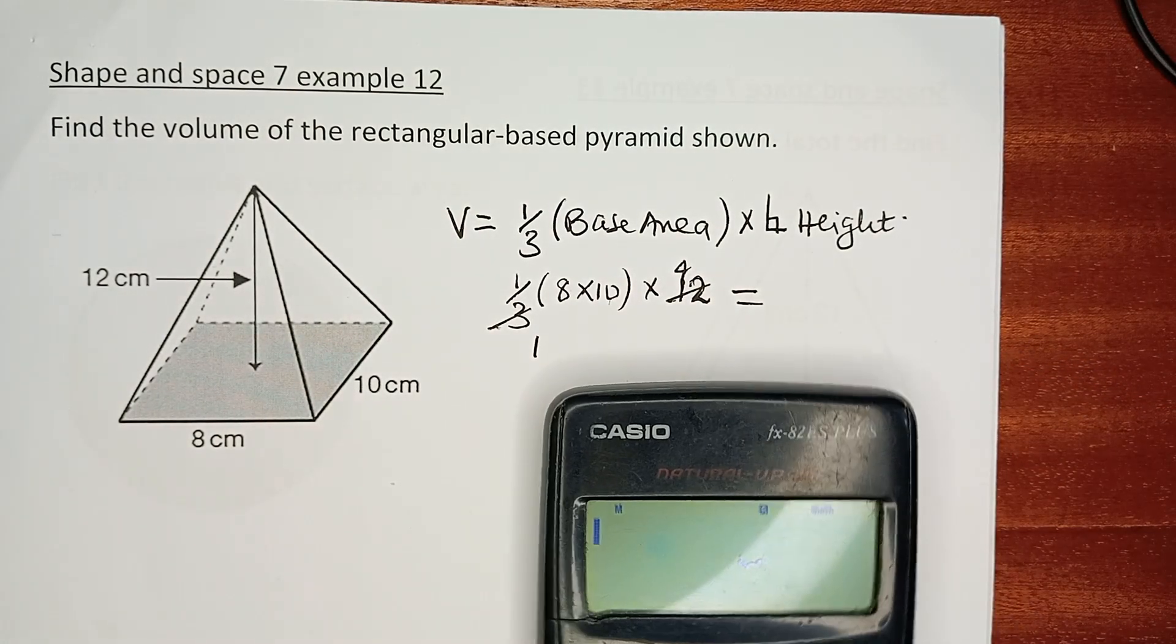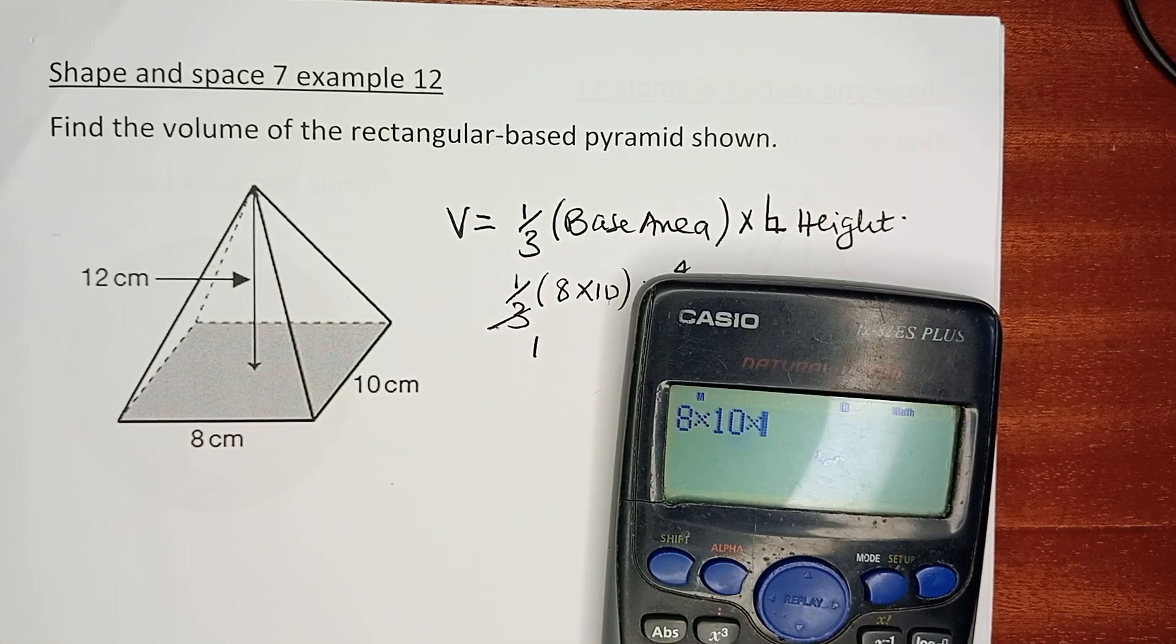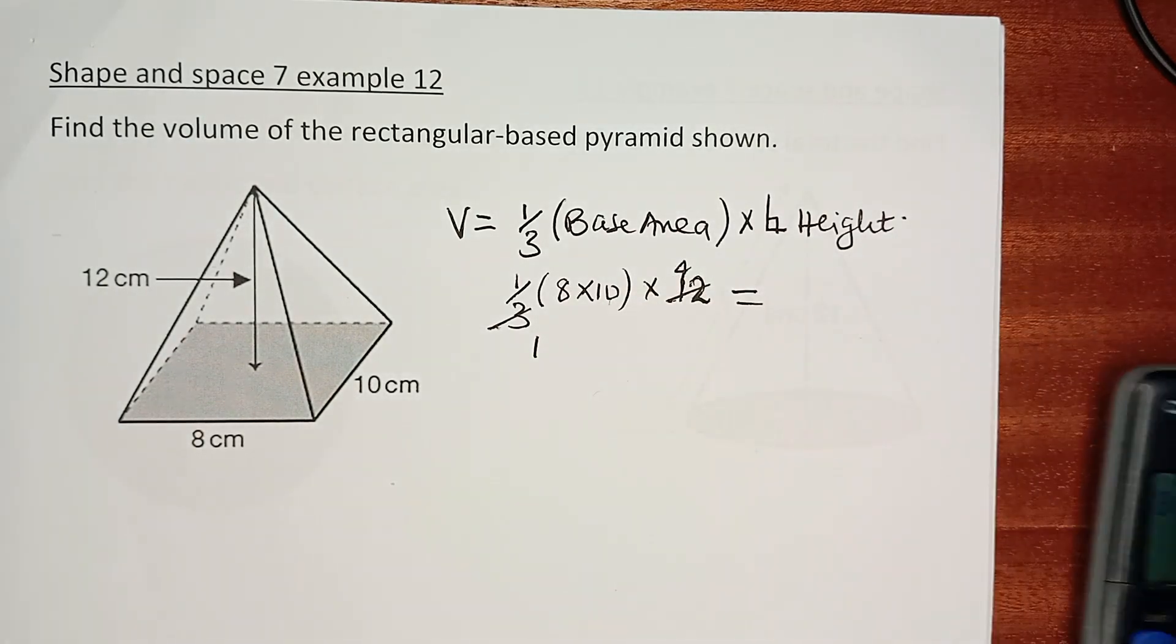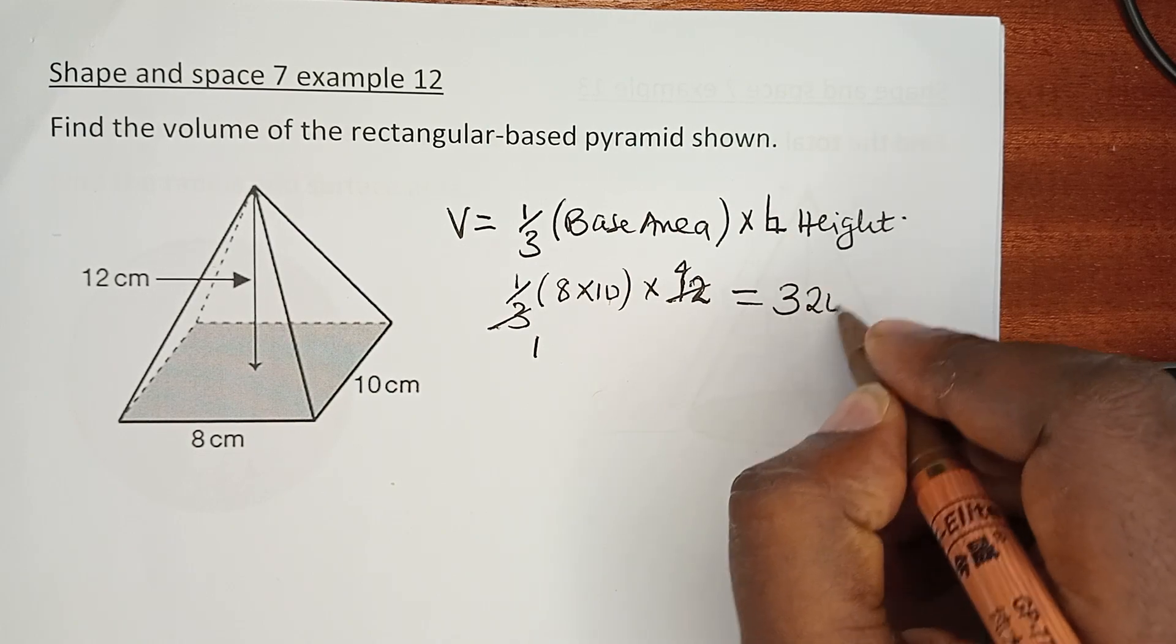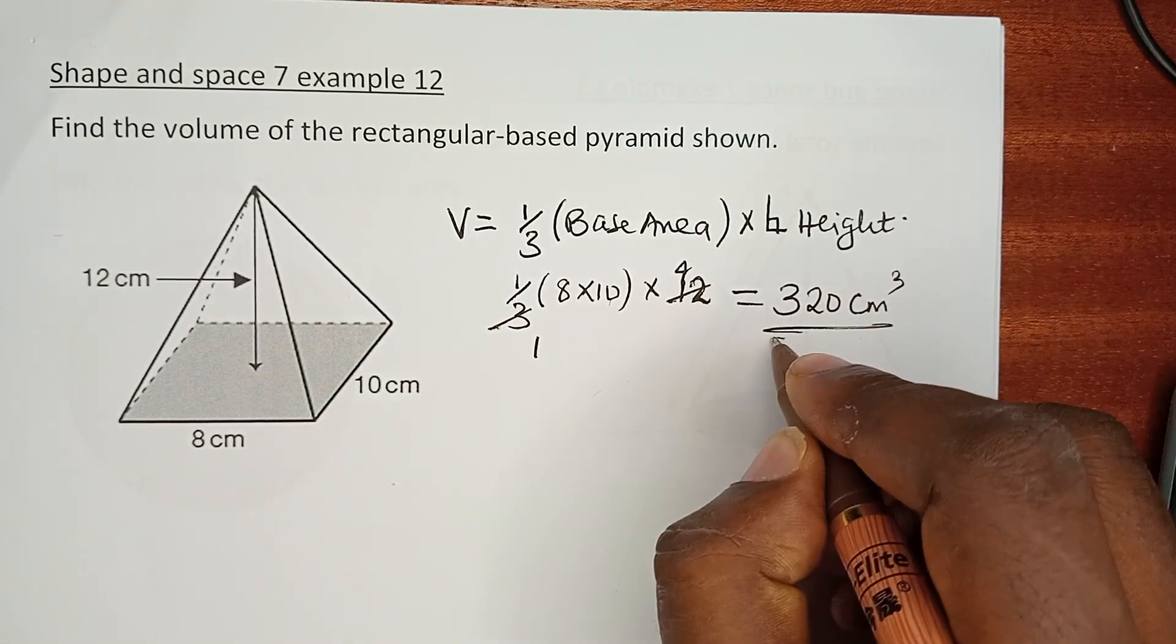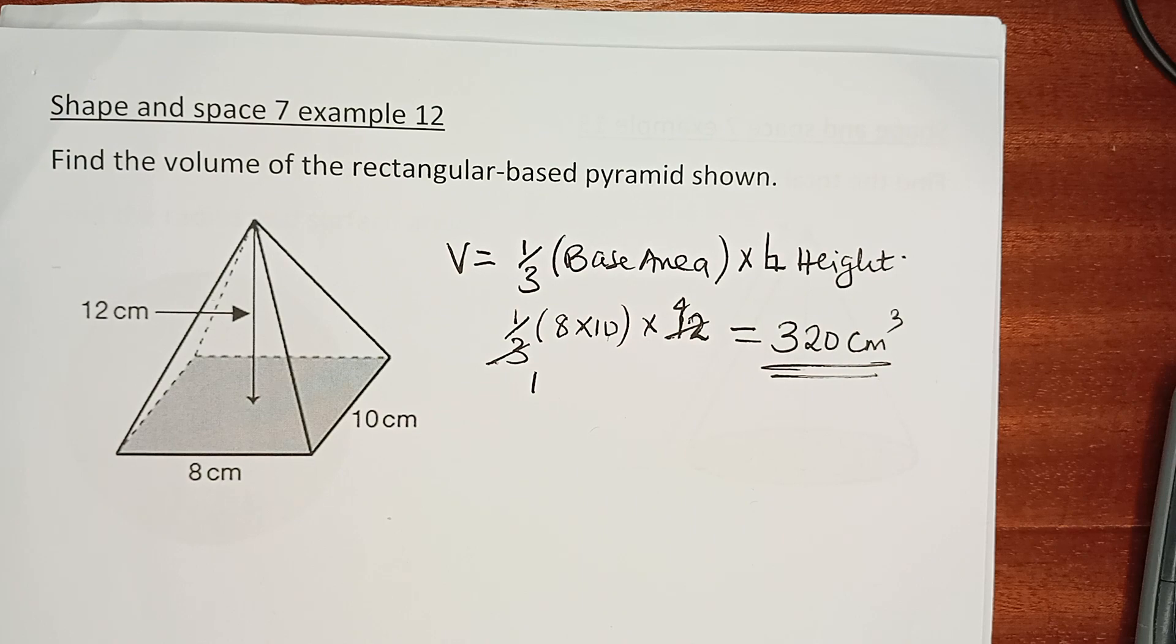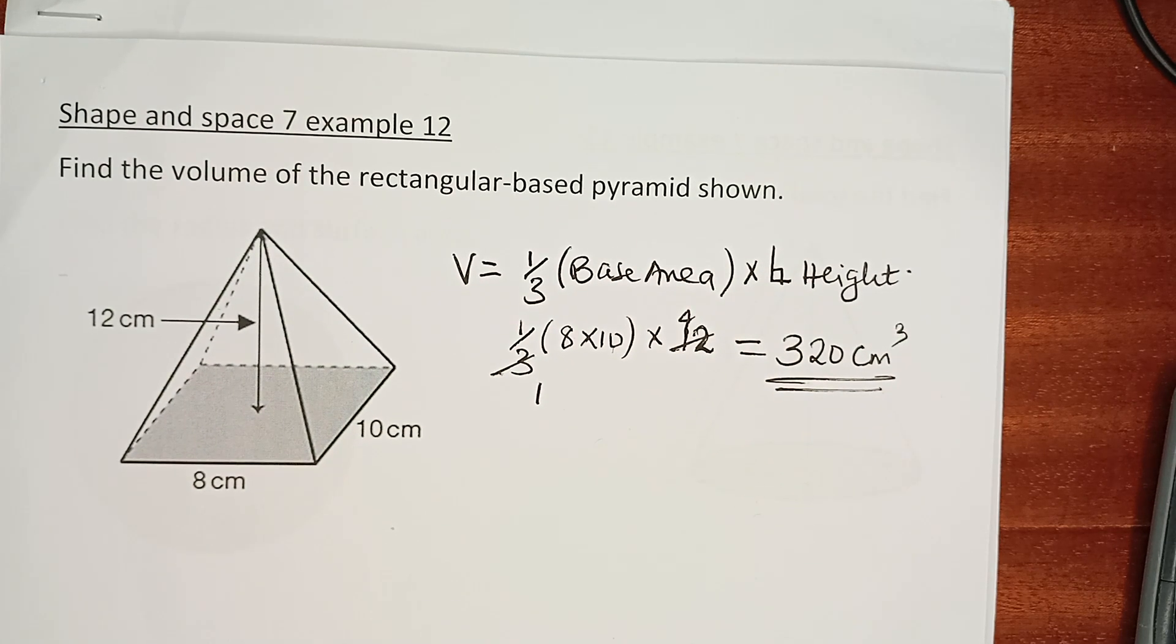This is 8 times 10 times 4, which is 320 centimeter cubed. That happens now to be the volume of that rectangular based pyramid. There you go, thank you and see you later.